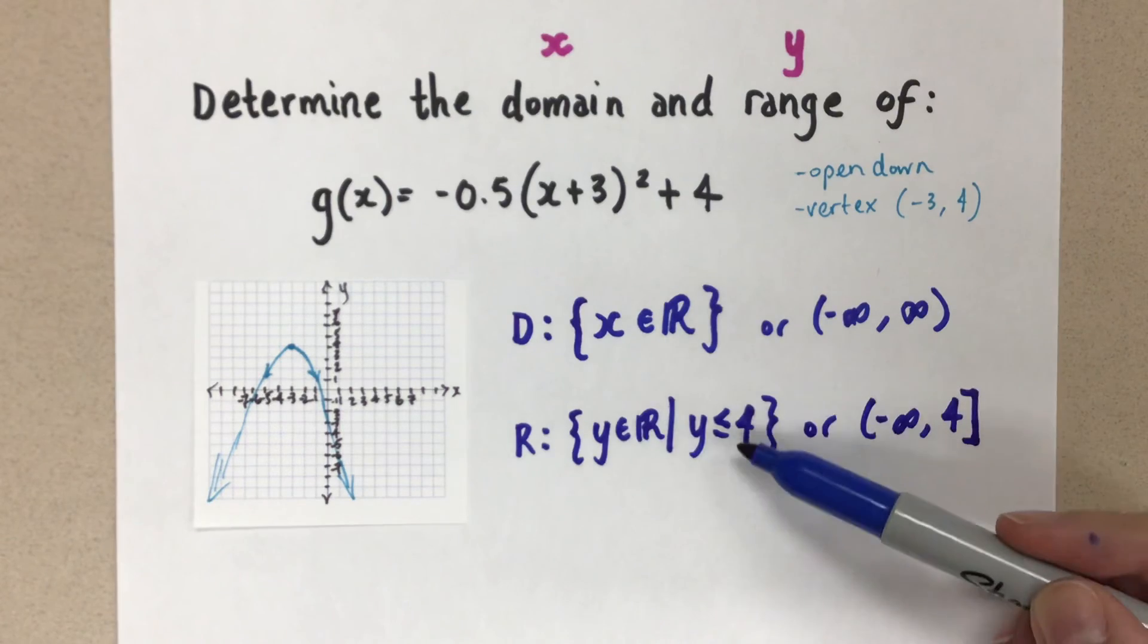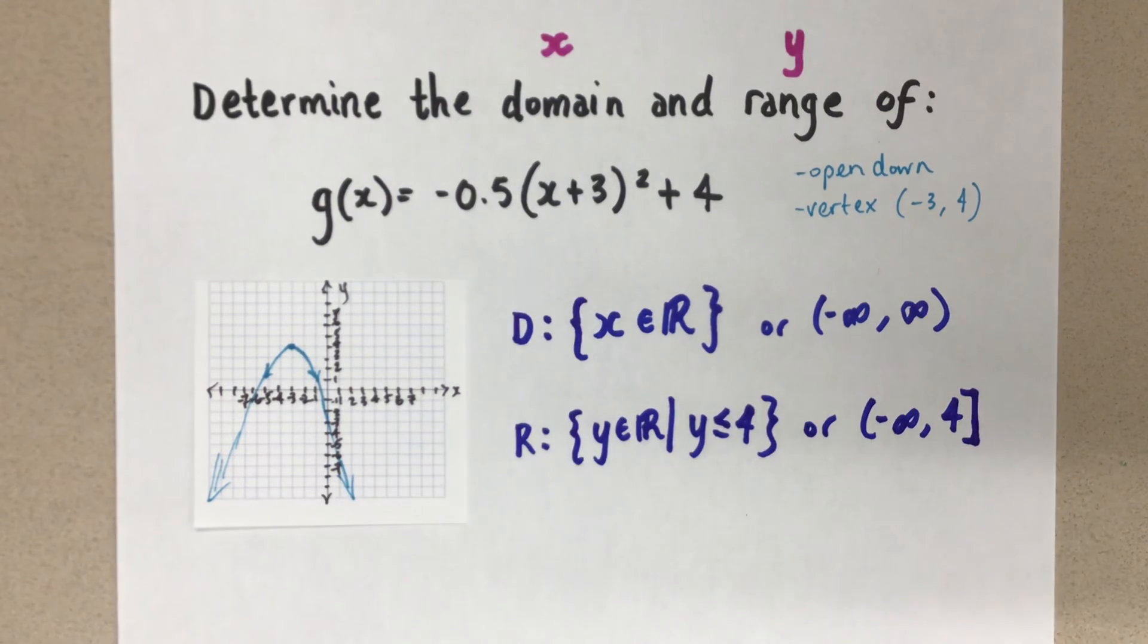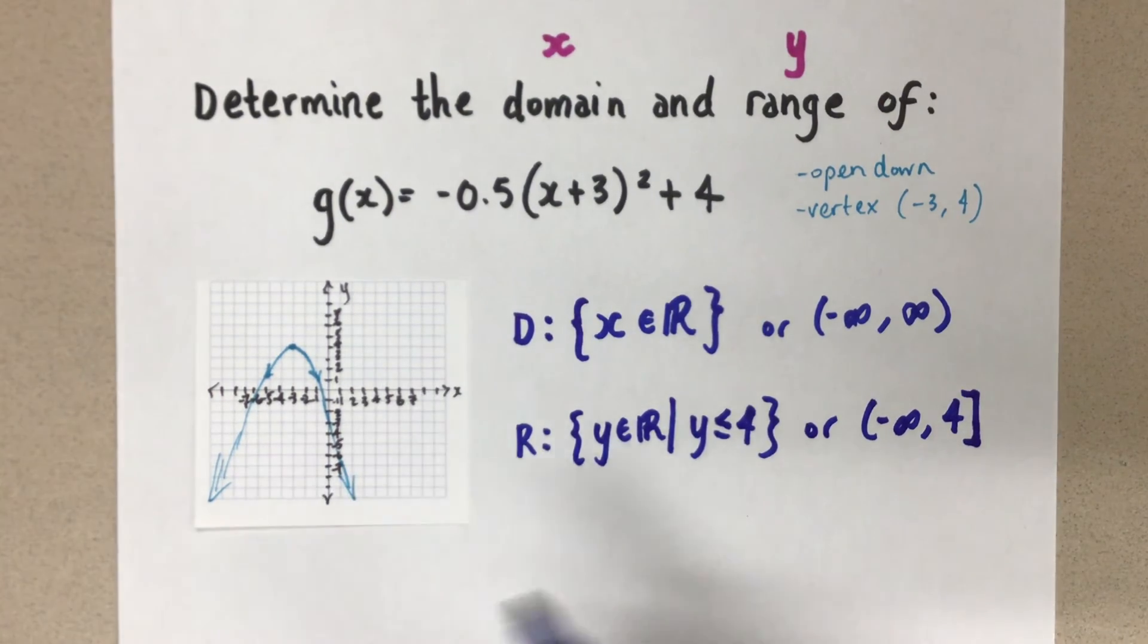So this is the domain and the range for this particular parabola. We always have to think about what it looks like on the graph in order to get that domain and range. Thanks for watching. Mrs. A loves math.